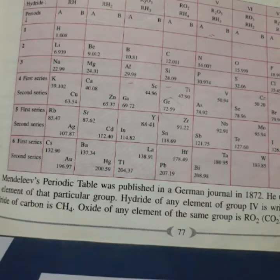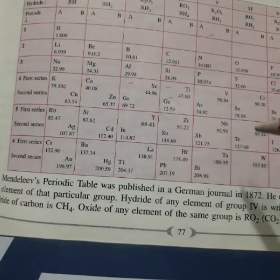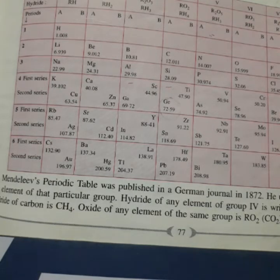But in some cases, he placed a slightly heavier element before a lighter one. For example, you can see tellurium with atomic mass 127.6 was placed before iodine. Atomic mass 126.9. Why? Because tellurium resembled sulfur and iodine resembled chlorine and bromine.